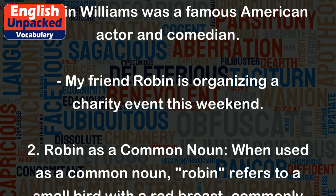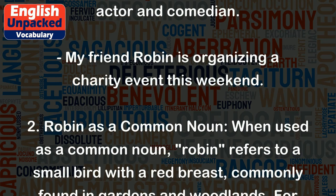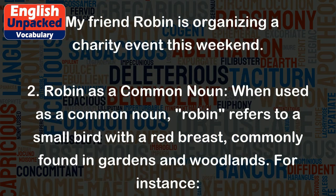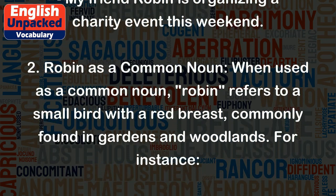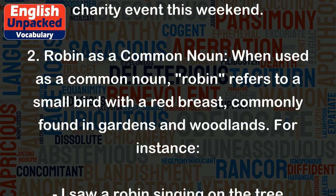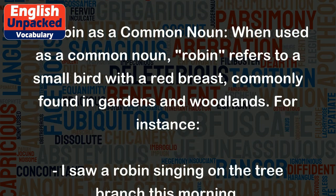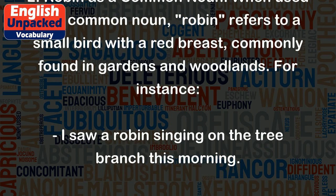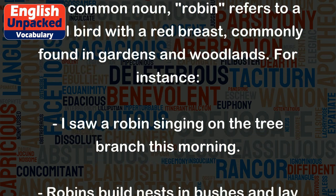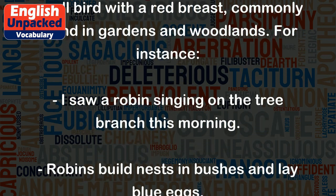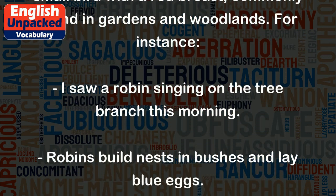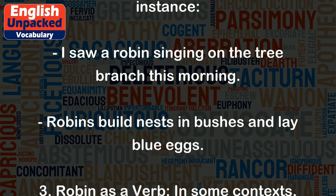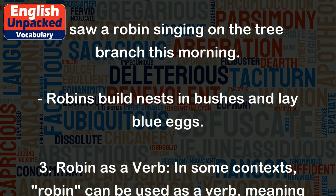2. Robin is a common noun. When used as a common noun, Robin refers to a small bird with a red breast, commonly found in gardens and woodlands. For instance, I saw a robin singing on the tree branch this morning. Robins build nests in bushes and lay blue eggs.